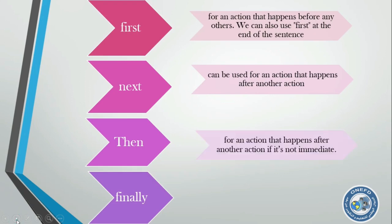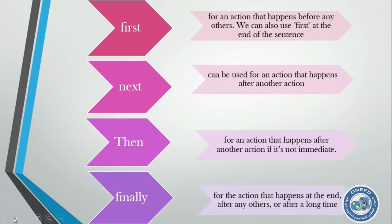'Then' is for an action that happens after another action, if it's not immediate. For example: 'Let's go to the airport, then we take the flight to Paris.' 'Finally' is for the action that happens at the end, after any others, or after a long time. As you say: 'We went to the museum, then we have seen some adorable landscapes, finally we went to the lake.'